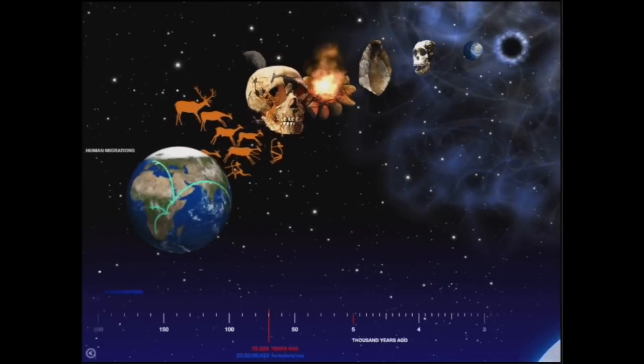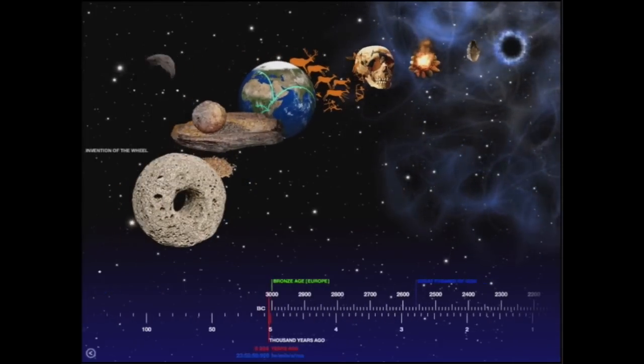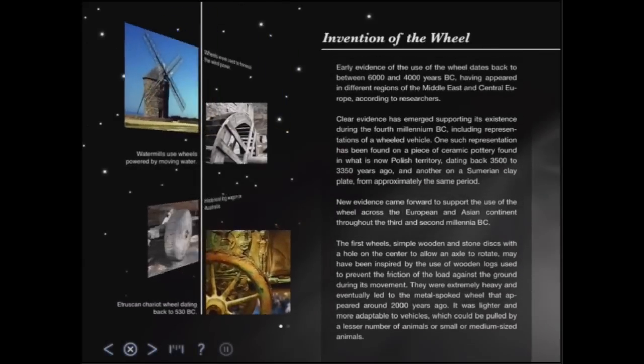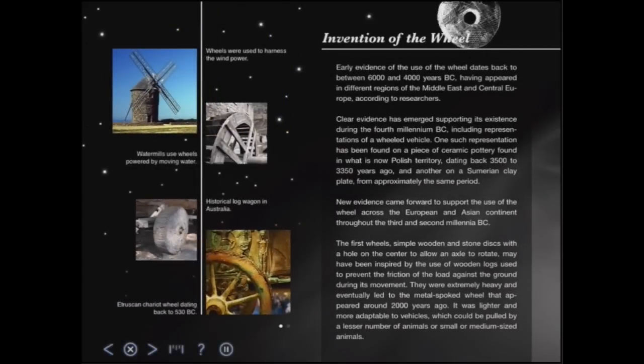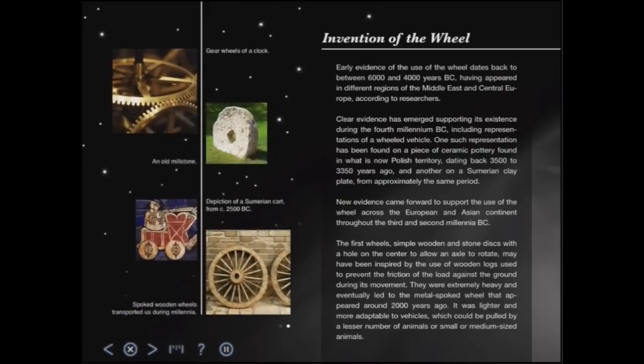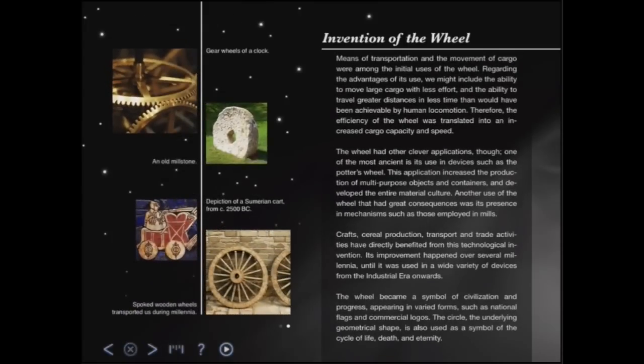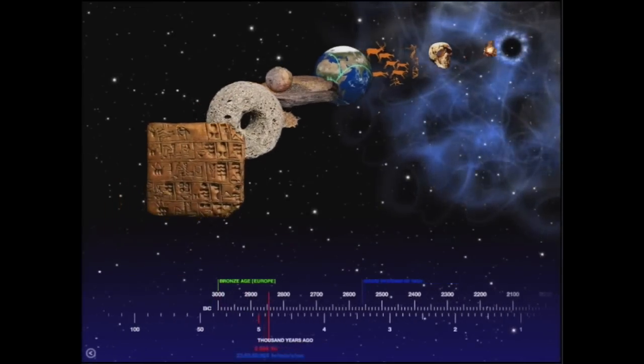What's this? The earth - ah, human migration around the earth, invention of the wheel. Let's tap the invention of the wheel. So here, early evidence is that it dates back to between 6,000 and 4,000 years BC. Look at that. So much information to learn in this beautifully presented app.